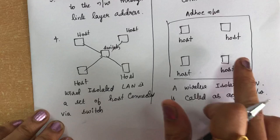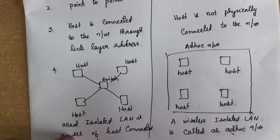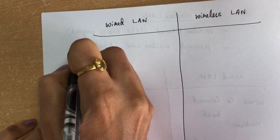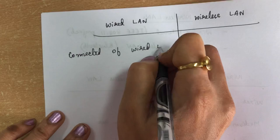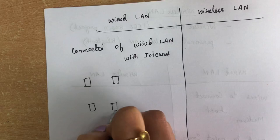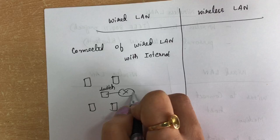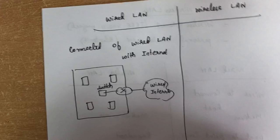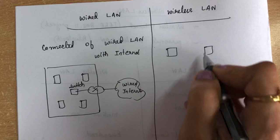In an ad hoc network, all the hosts can communicate freely with each other without any additional infrastructure. The next difference is the connection of wired LAN with the internet. In wired LAN, you have many hosts connected via a switch, and from that we use a router to connect to the internet.